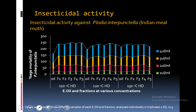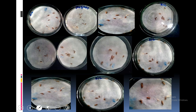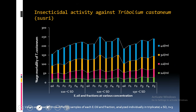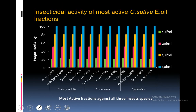Insecticidal activity was performed using various insects like Indian meal moth, at concentrations of 1, 2 and 3 microliters per ml of isolated most active fractions and essential oils. The percentage mortality of Indian meal moth is presented. This is the overall insecticidal activity of the most active Cannabis sativa essential oil fractions.